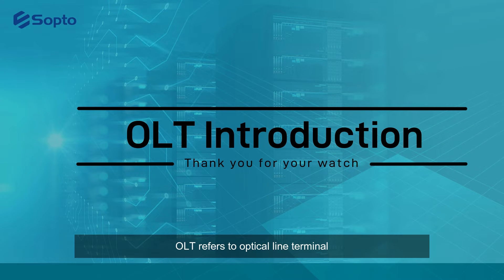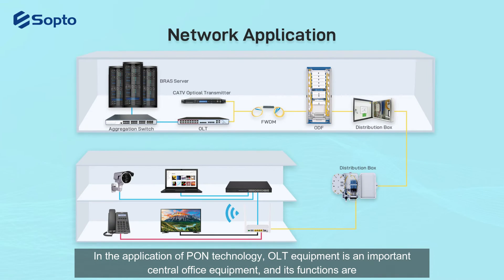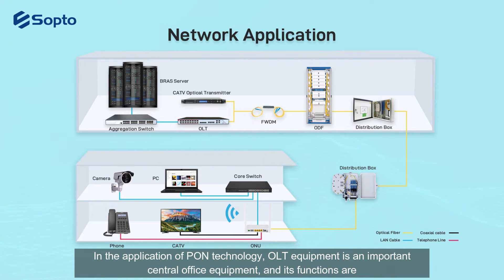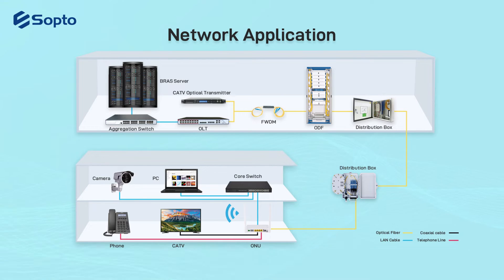OLT refers to Optical Line Terminal. In the application of PON technology, OLT equipment is an important central office equipment, and its functions are to connect to the front-end switch with a network cable, convert it into an optical signal, and use a single fiber to interconnect with the optical splitter at the user end.